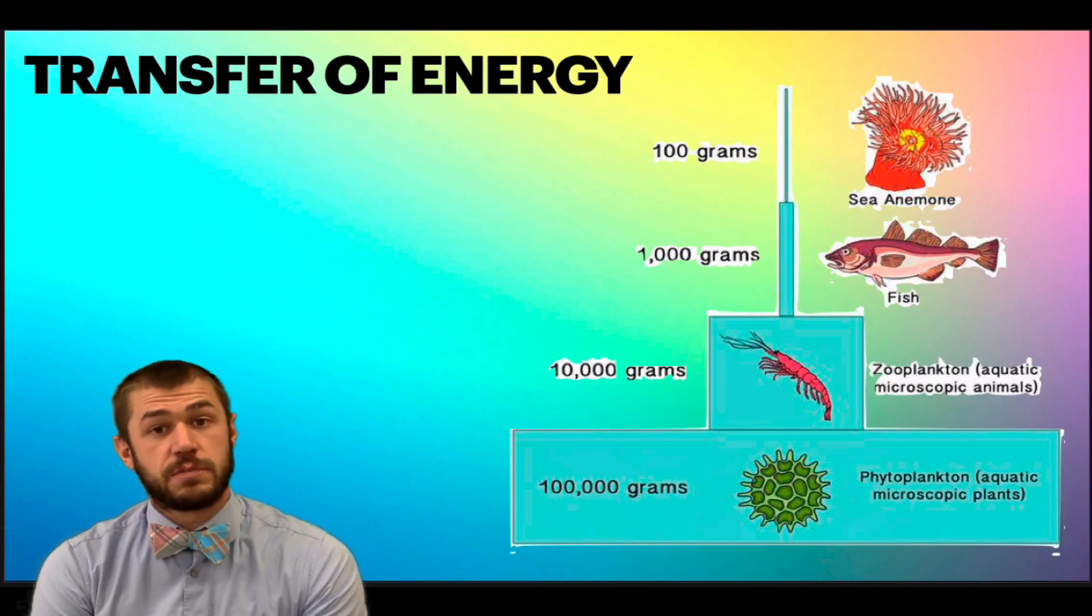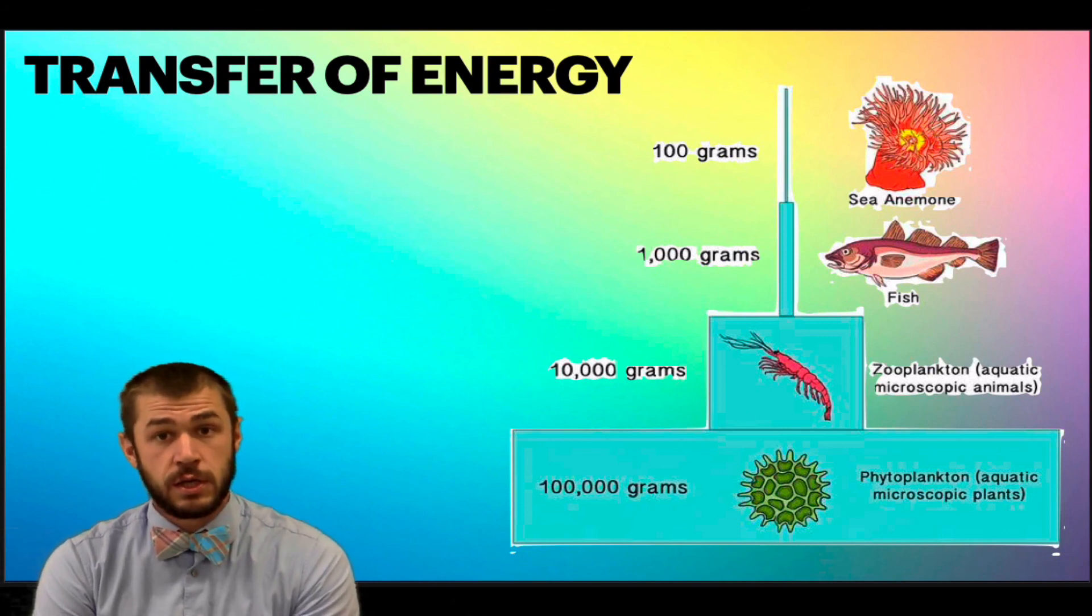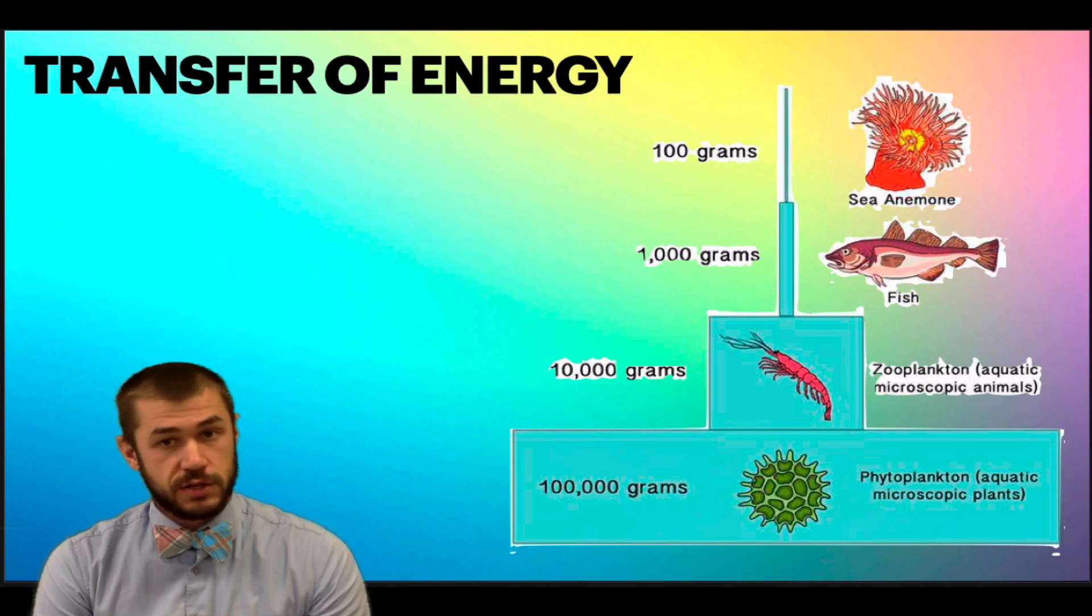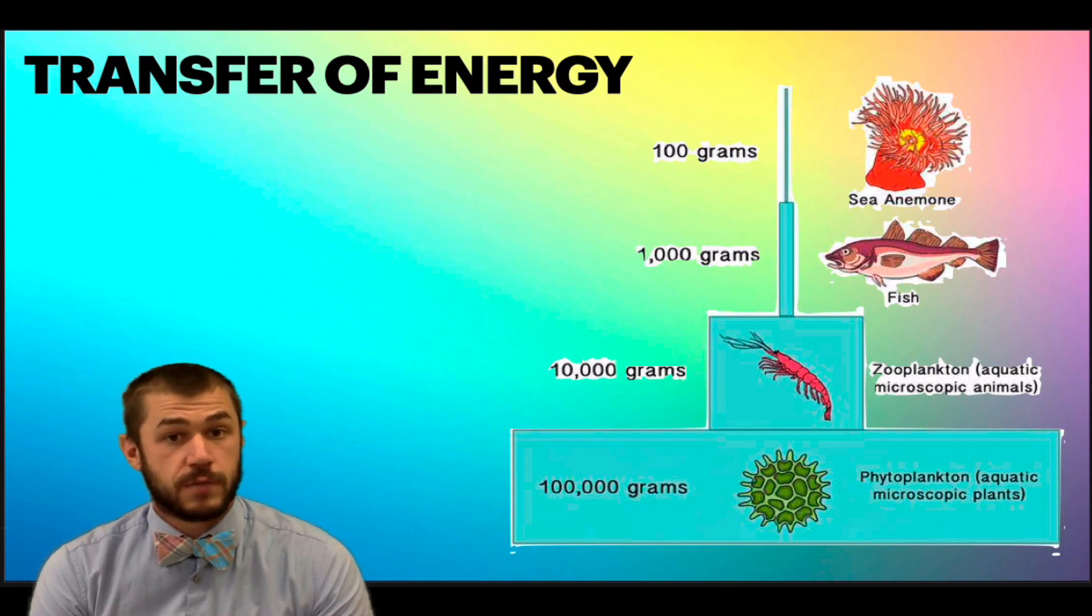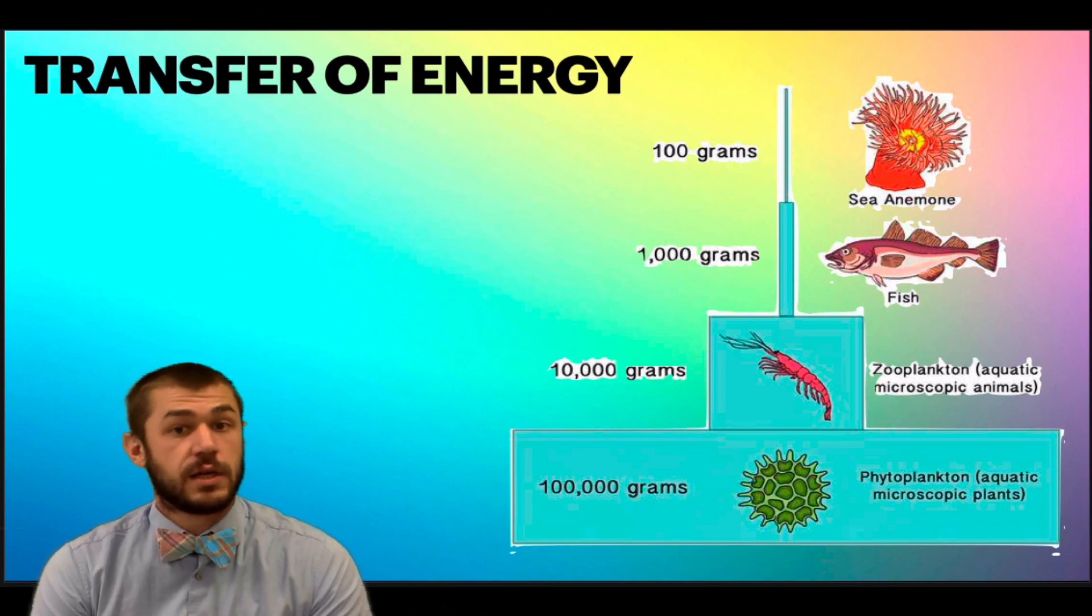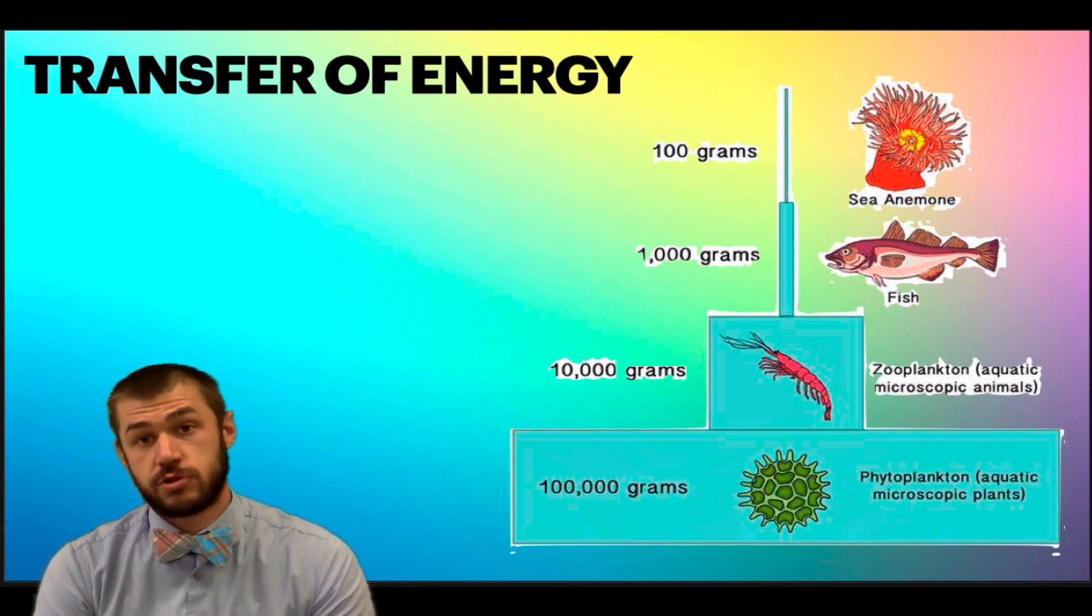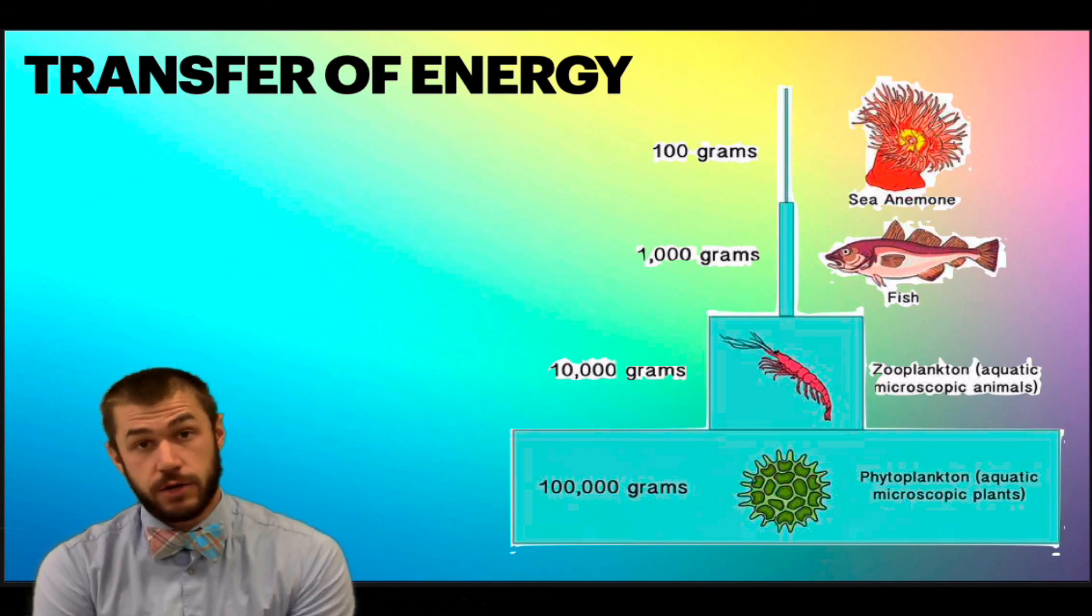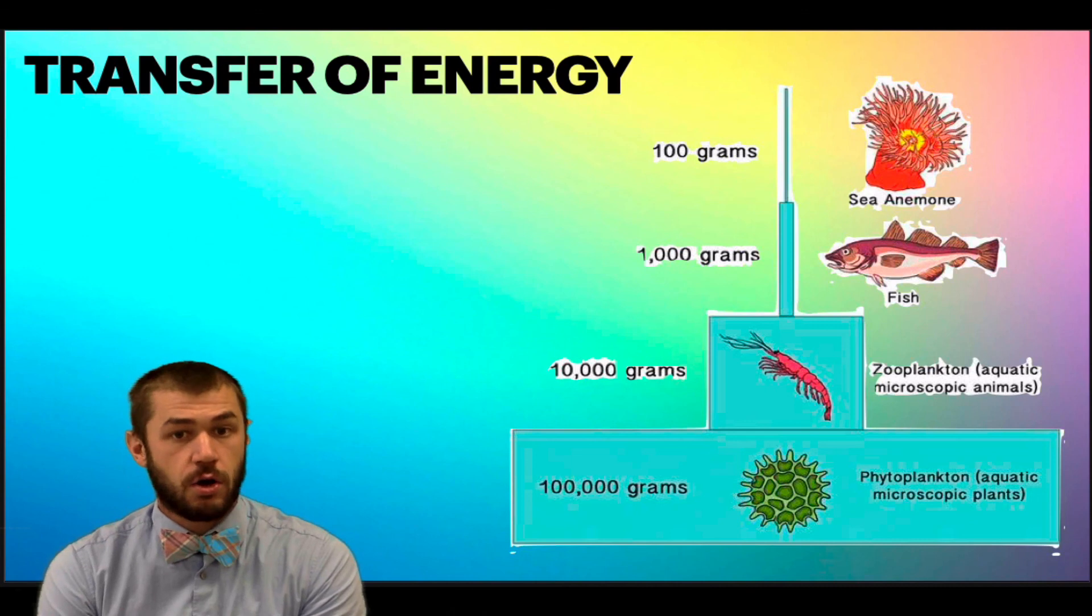Another way to look at this is through these energy pyramids or biomass pyramids. So we can look at a system. In this case, it's an aquatic marine system, and we could weigh all of the organisms at certain trophic levels for a given area. So in this case, all of the phytoplankton makes up 100,000 grams, all of the zooplankton is 10,000 grams, 1,000 grams at the third trophic level where there are fish, and then only 100 grams of sea anemone. We're going to max out at around four or five trophic levels in almost all systems, and that's because there's a limited amount of energy that can make it all the way to the top.